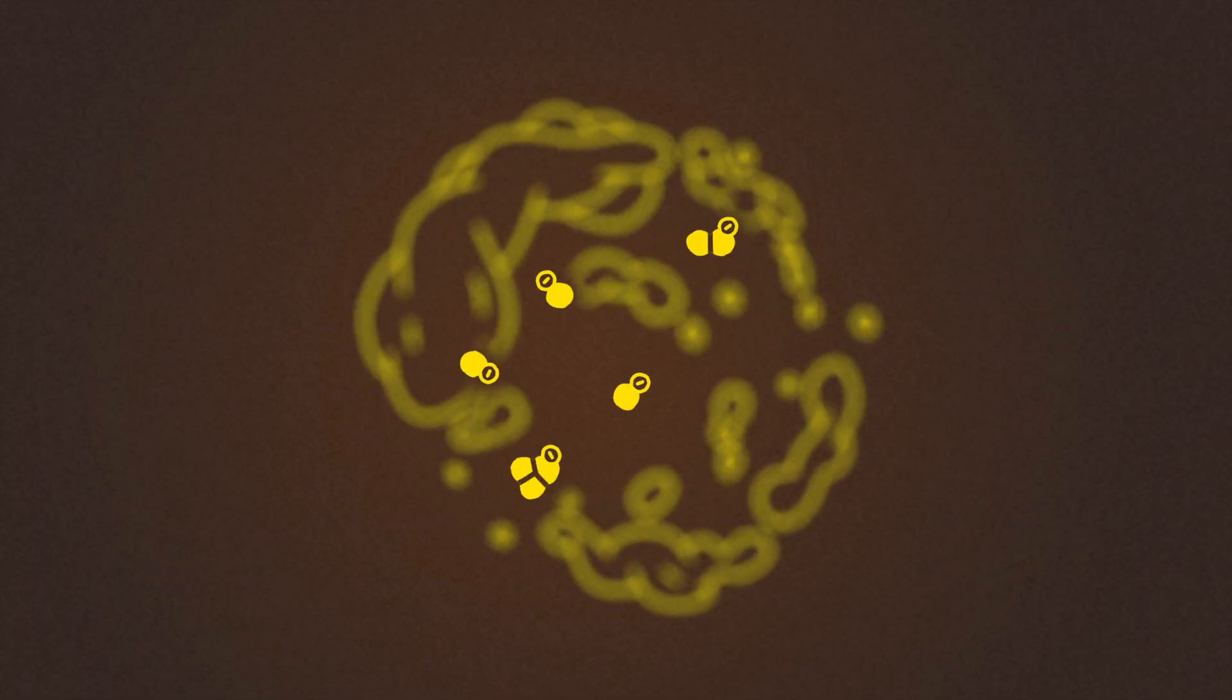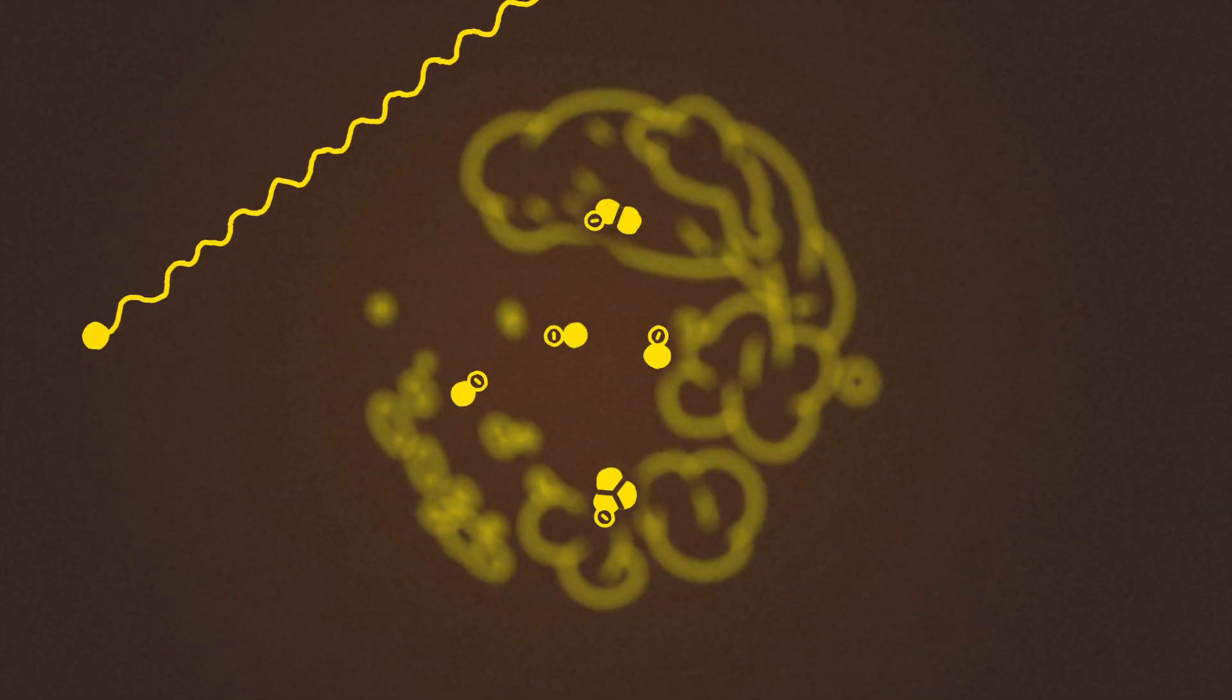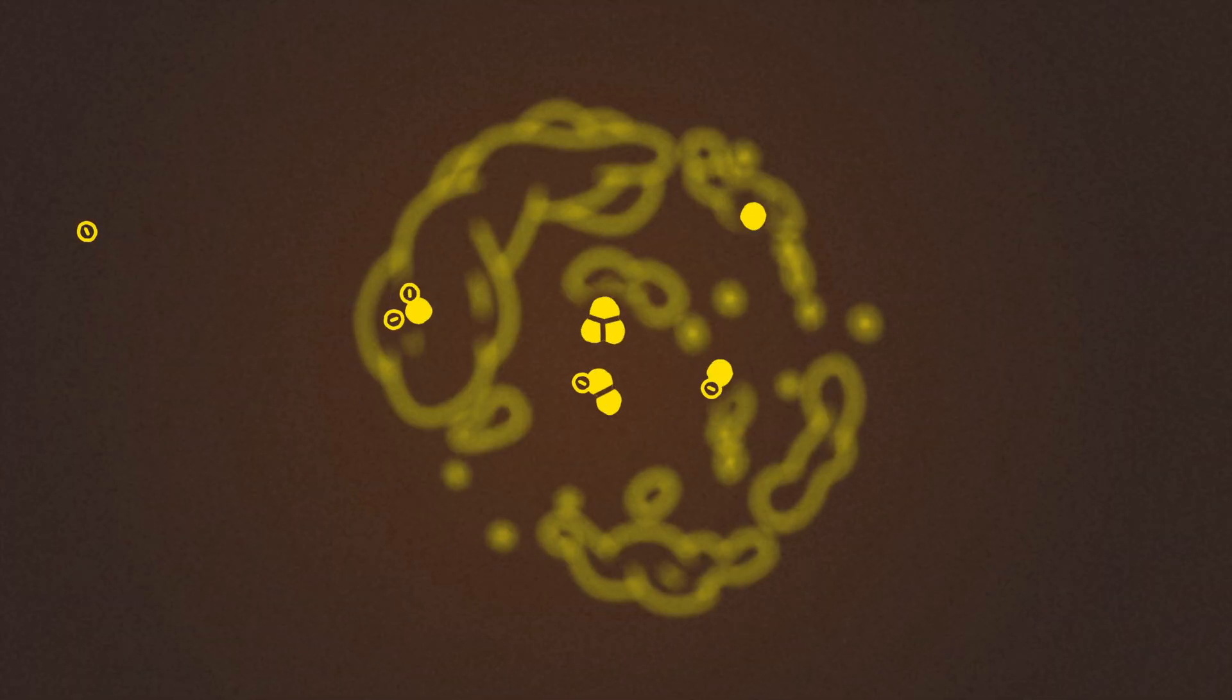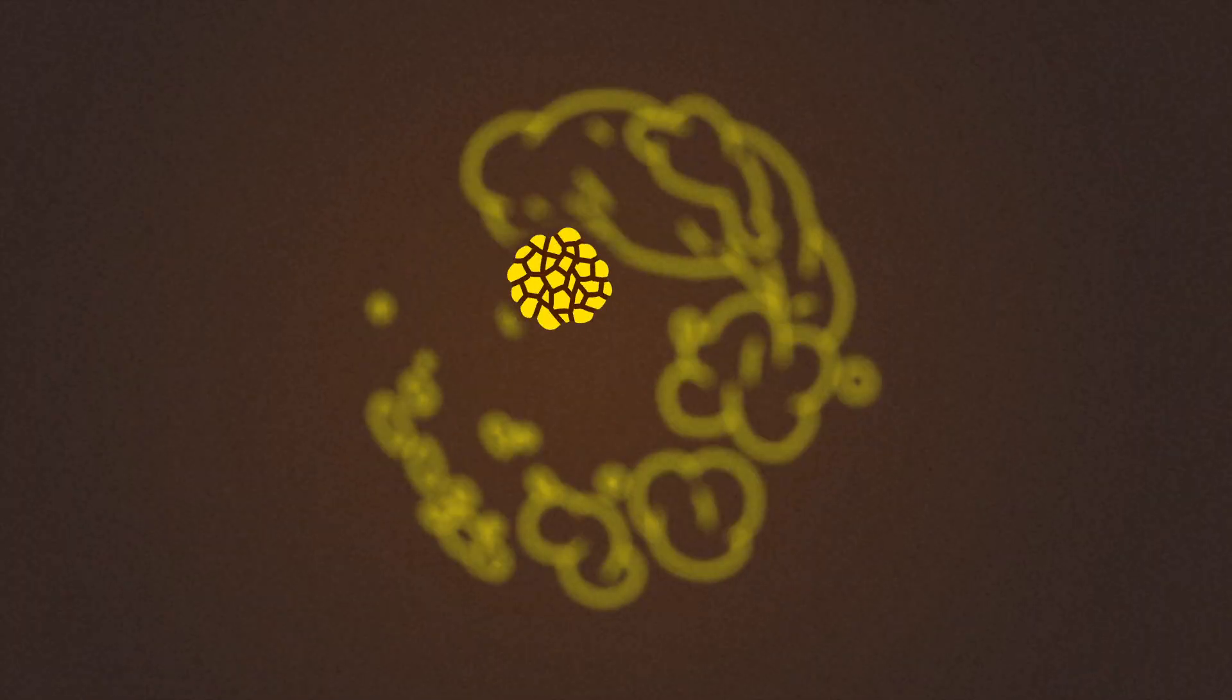One theory suggests that high-energy particles can knock more electrons off of some dust clumps, leaving them positively charged. Opposites again attract, and clusters grow rapidly.